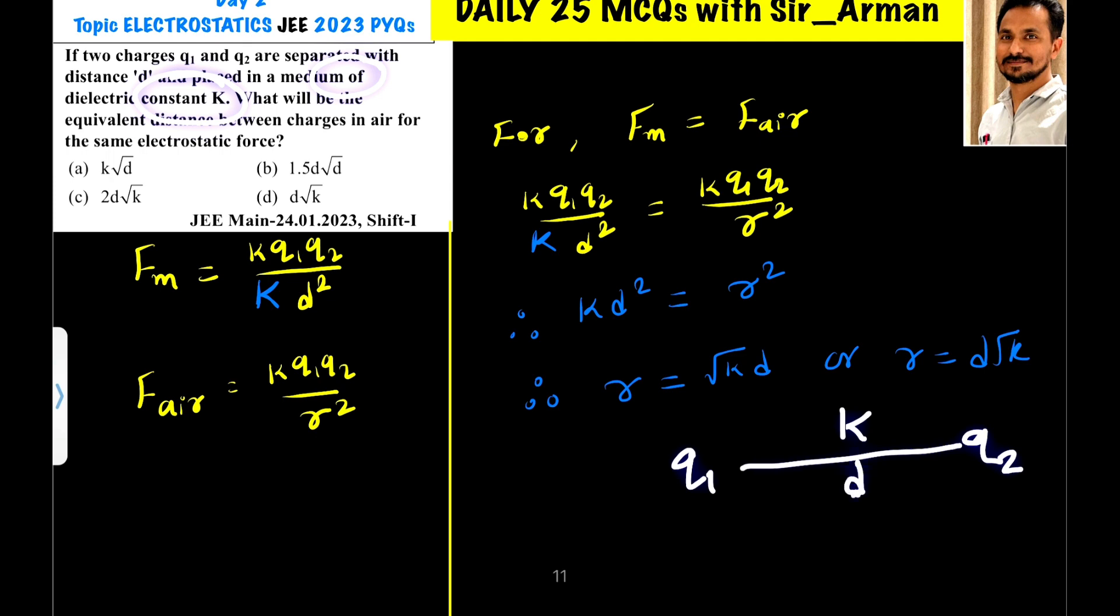Then the force between them is given by k Q1 Q2 by k into d square. Here the capital K is dielectric constant and this k, small k, is the Coulomb's constant.